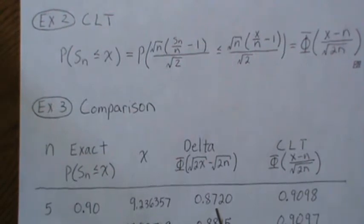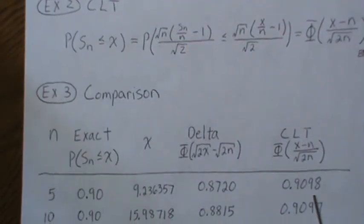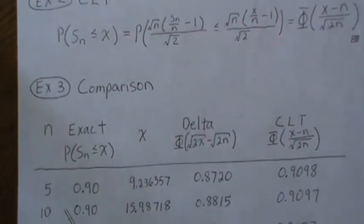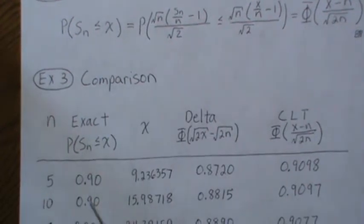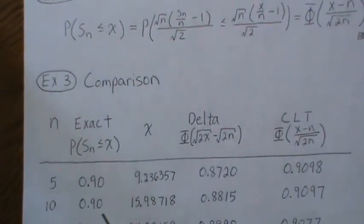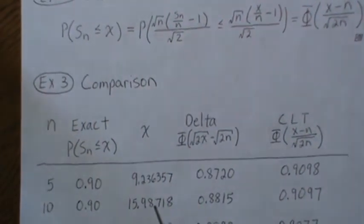The delta method would give us 0.87 and the Central Limit Theorem would be 0.91. Each time we're going to increase the sample size and keep this exact. Then the cutoff becomes 15.